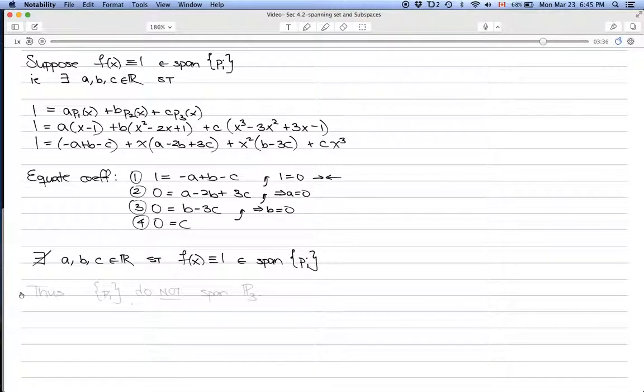We can conclude that the vectors p1, p2, and p3 do not span P3. Remember, these are the polynomials with degree 3 or less.